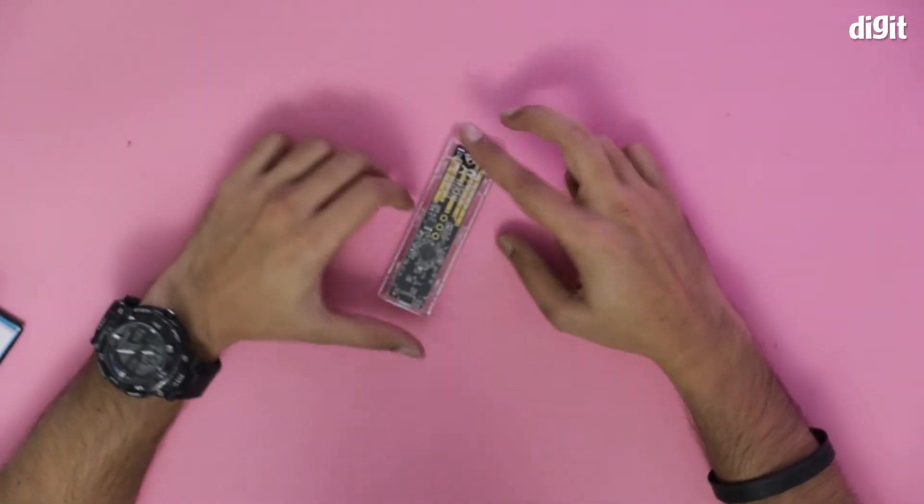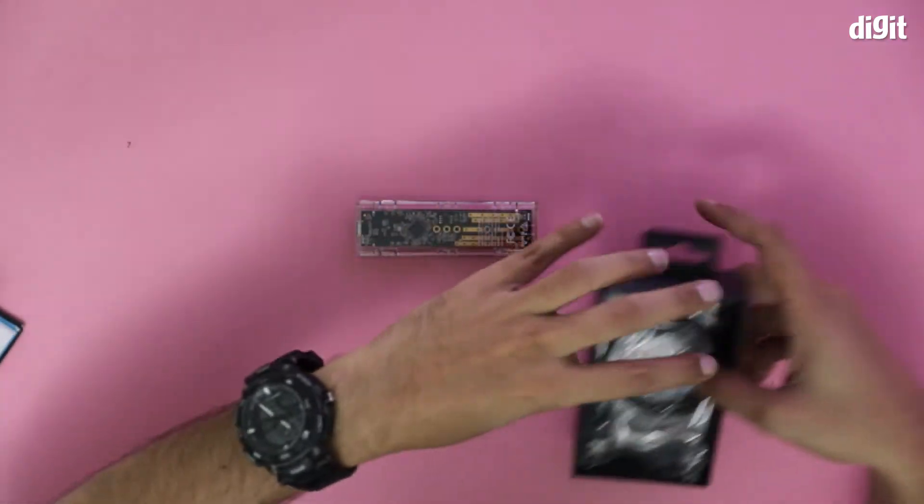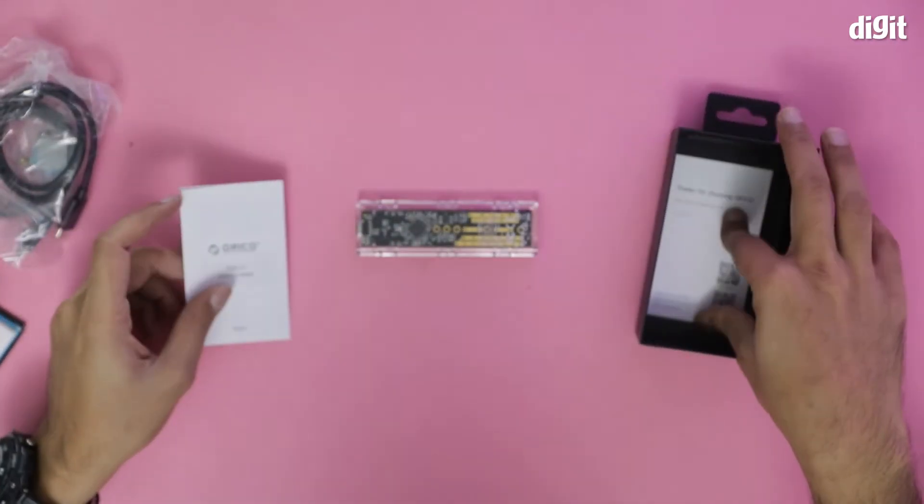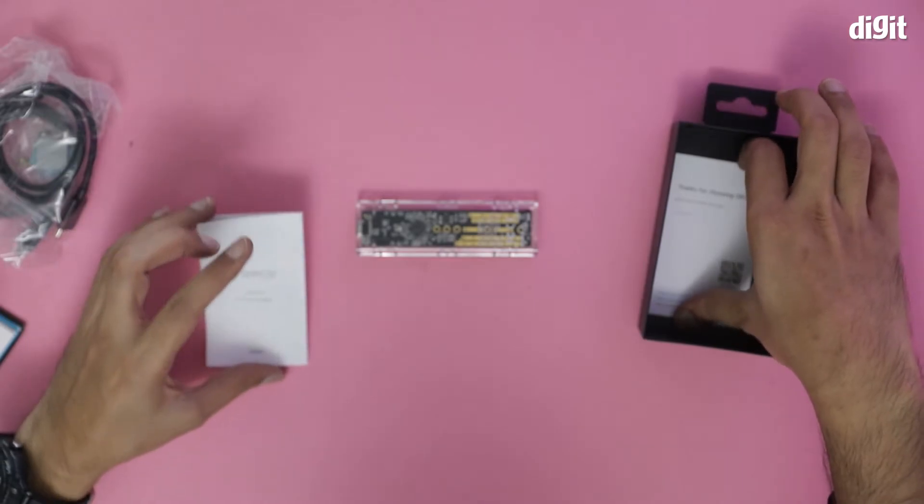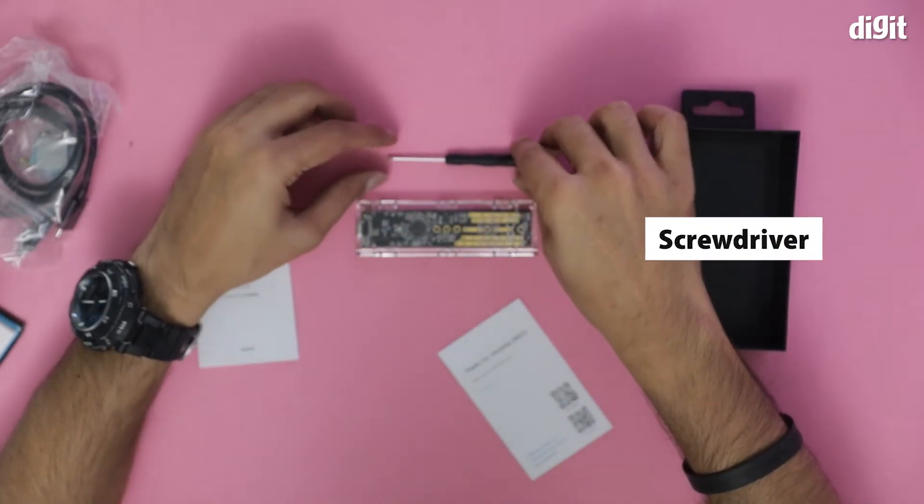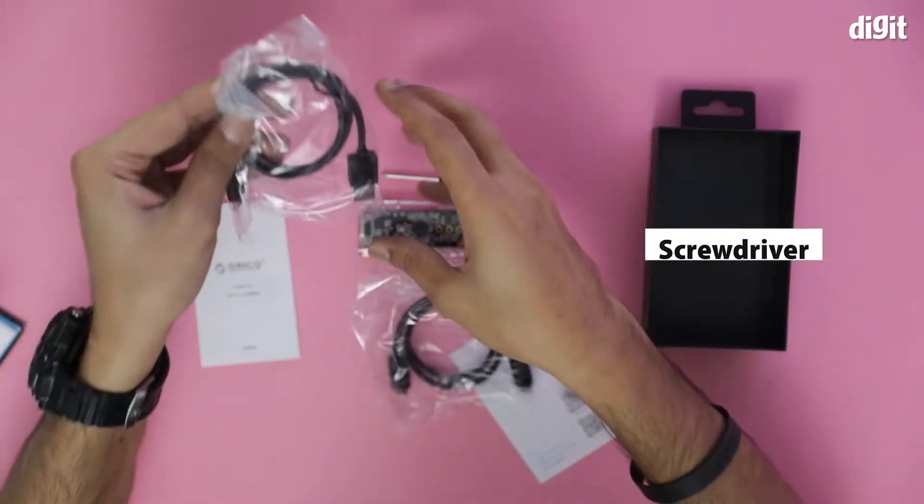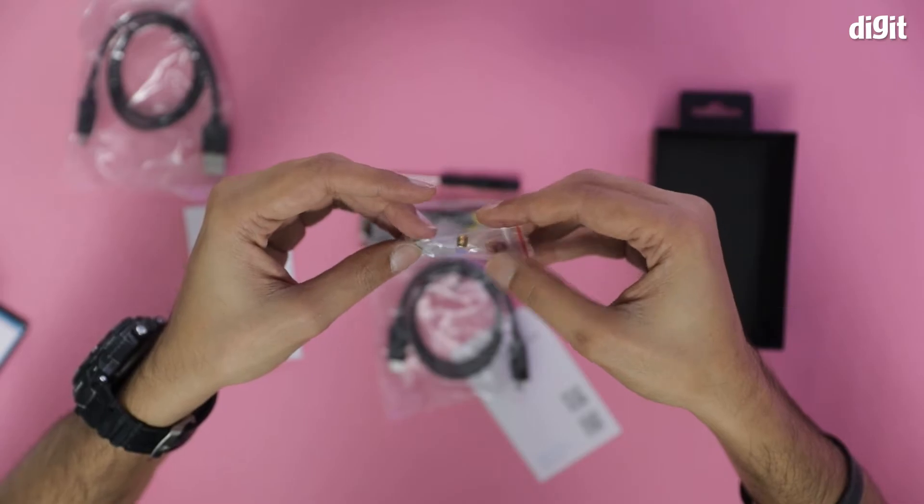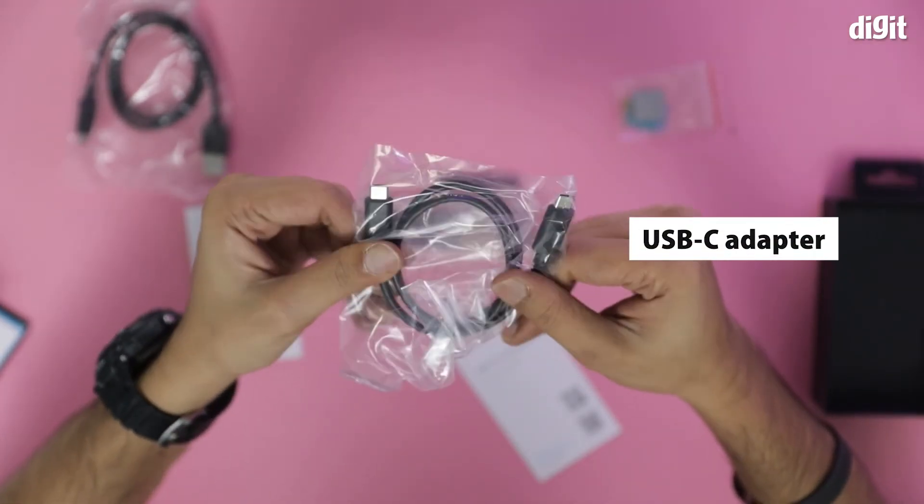A lot of stuff here. I will go through each and every one of them. This is a screwdriver for fitting it in. This also comes with a couple of stickers. This is a C type to C type charging cable.